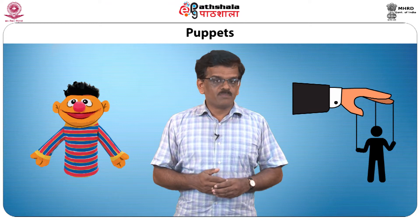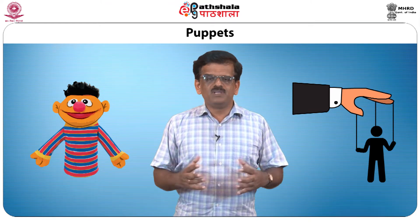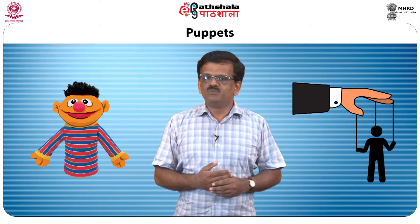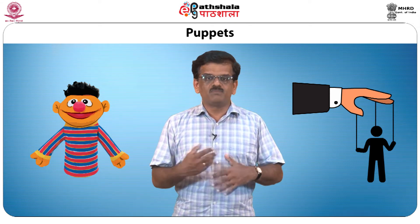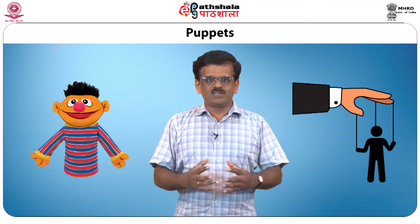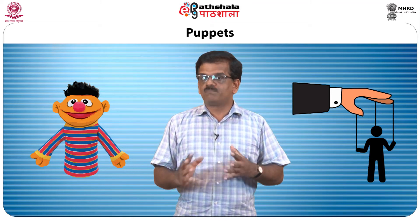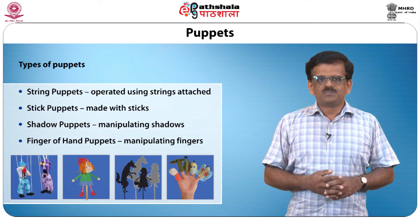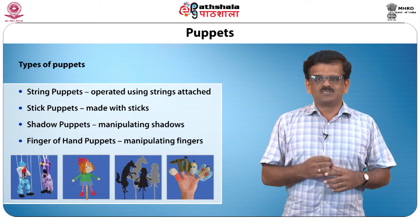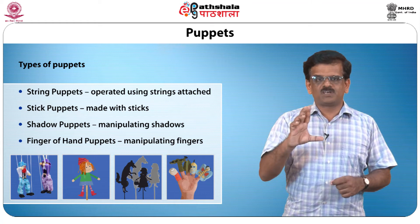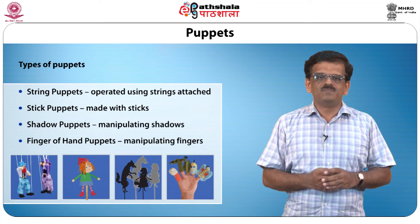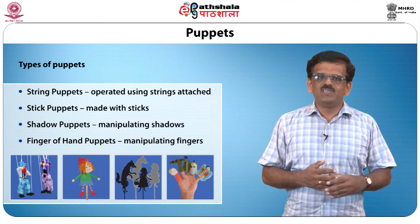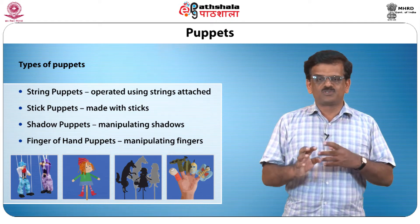The third type of three-dimensional non-projected aid is the puppet. Puppet shows are a very traditional art of Indian culture and were extensively used during the freedom movement. Puppets are simple toys — dolls dressed in characteristic costumes and manipulated by a human performer called a puppeteer. They are used mostly in language teaching and social sciences. Types include string puppets attached with strings, stick puppets attached to a stick, shadow puppets made using finger shadows, and hand puppets manipulated by the fingers.